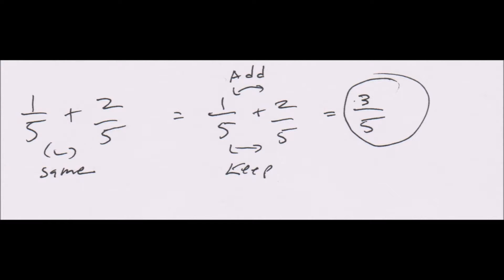The first example is pretty simple — same denominators. You just add the tops and keep the bottom number the same for the solution. So one-fifth plus two-fifths equals three-fifths. Just one plus two, and keep the five. Easy.